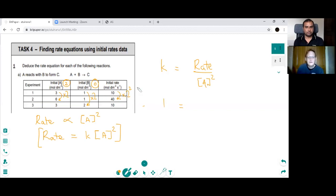We'll say k equals the initial rate, which is 10, over the initial concentration of A for experiment 1 is 3. So we've got 3 squared, which is 10 over 9, which is 1 and 1 ninth.